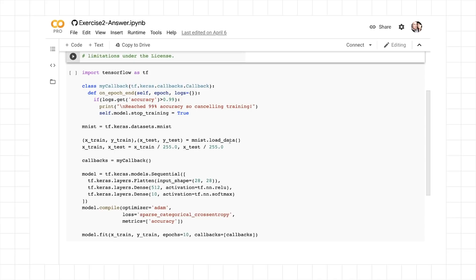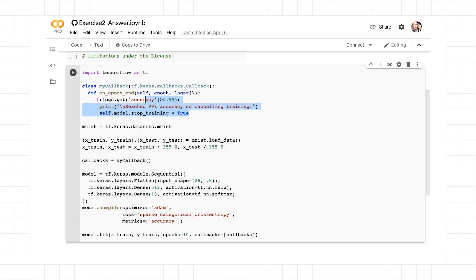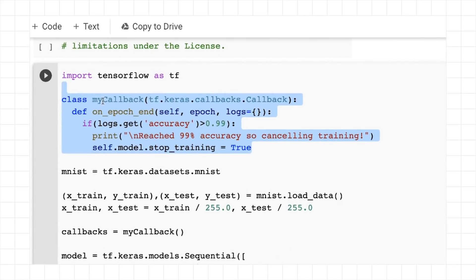So let's take a look at the answer to exercise two. The code is here. One of the things I've done is to implement a callback, and I've done that by creating a class called MyCallback. And in this class, I defined OnEpochEnd, and this takes self, epoch, and logs. From the logs, I can get the accuracy. And if the accuracy, for example, is greater than 0.99, I can say print, we've reached 99% accuracy, so the training will be canceled.